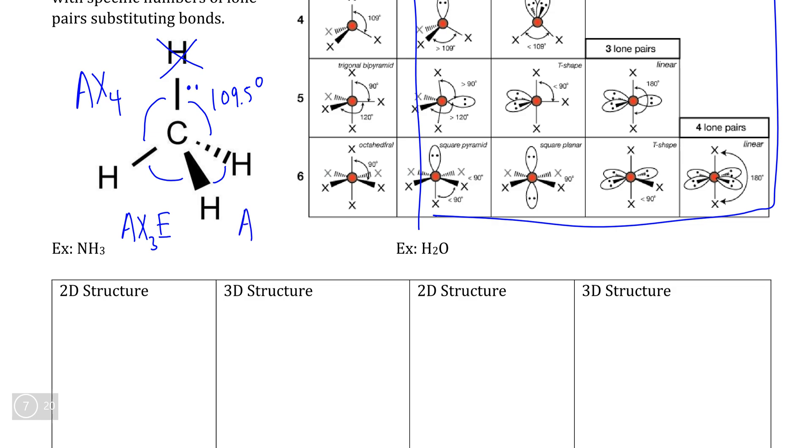If we were dealing with a molecule that was AX2E2, which means the central atom has two bonding groups and two lone pairs, we could predict the geometry of that by removing a second hydrogen and substituting it with a lone pair like this.